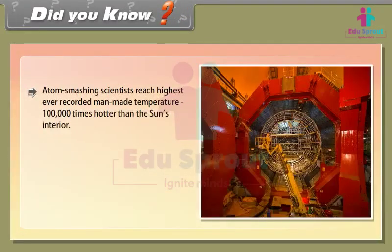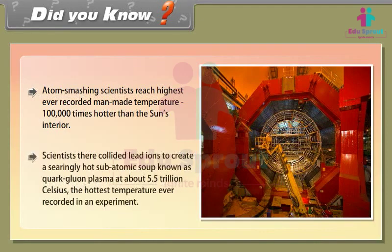Did you know? Atom-smashing scientists reached the highest ever recorded man-made temperature — one lakh times hotter than the sun's interior. Scientists collided lead ions to create a searingly hot subatomic soup known as quark-gluon plasma, at about 5.5 trillion degrees Celsius — the hottest temperature ever recorded in an experiment.